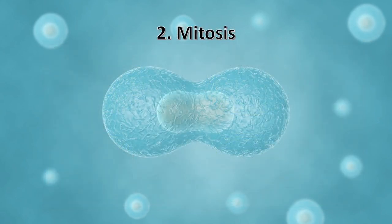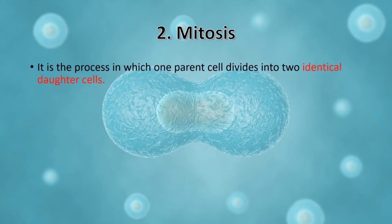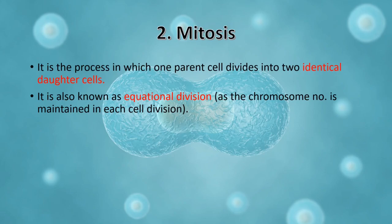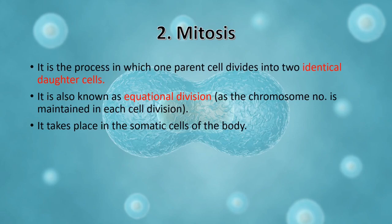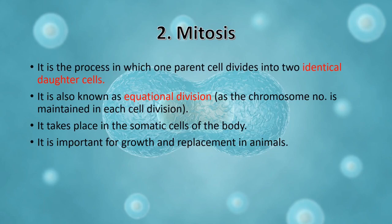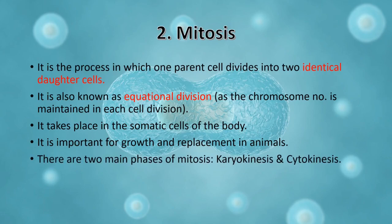Now let's move on to mitosis. Mitosis is the type of cell division in which one parent cell divides into two identical daughter cells — identical meaning the two cells are going to look alike. It is also known as equational division because the chromosome number is maintained in each division: the number we start with is the number we end with. It takes place in the somatic cells of the body, meaning all cells except the sex cells, and is important for growth and replacement.